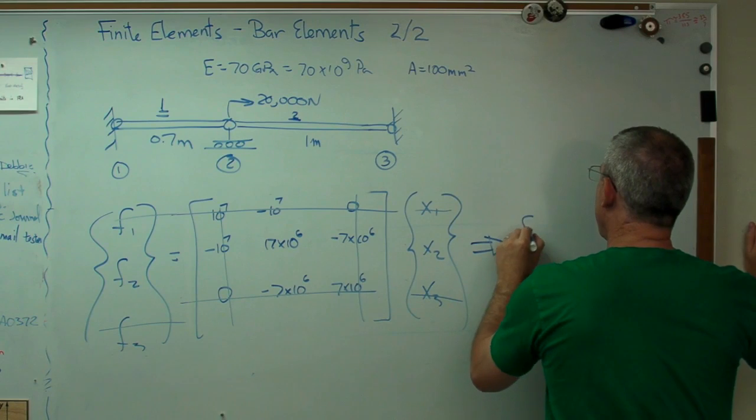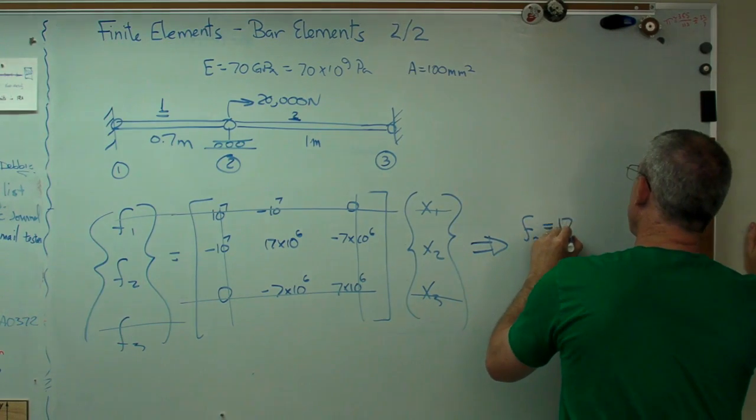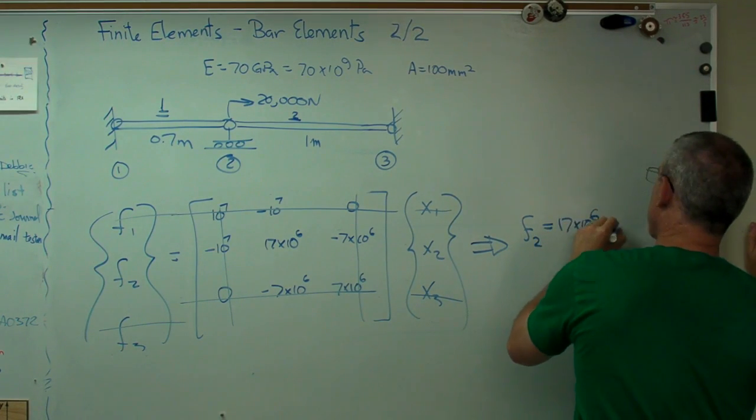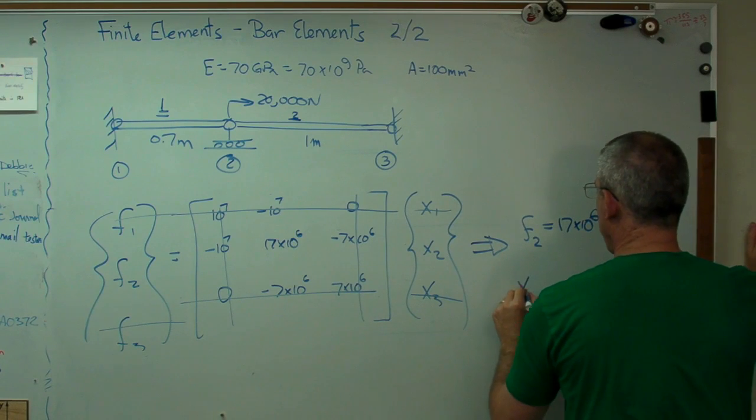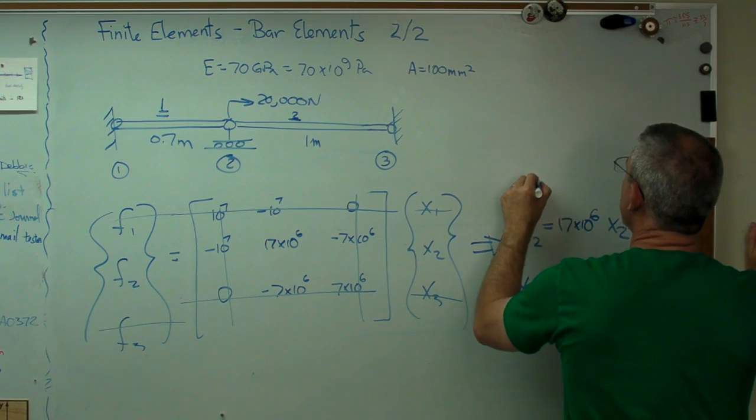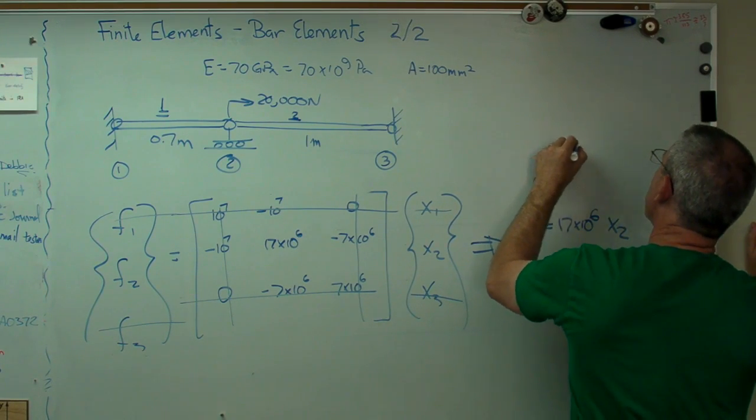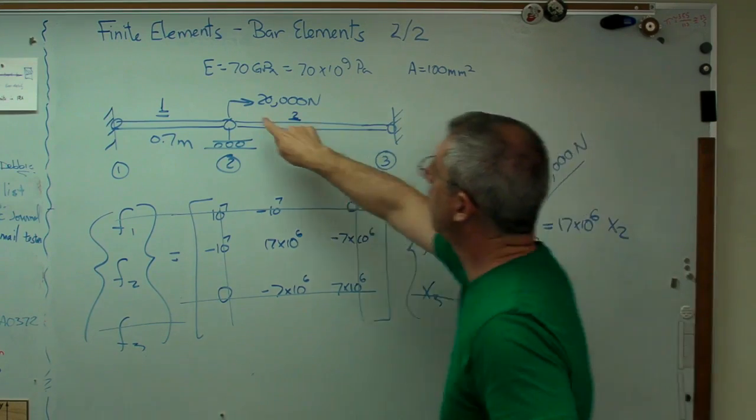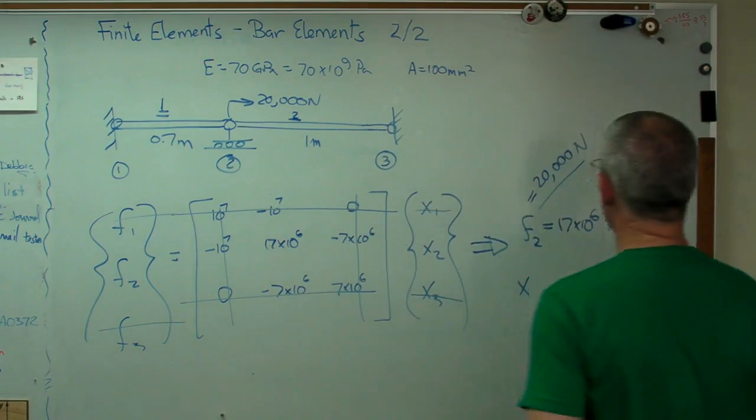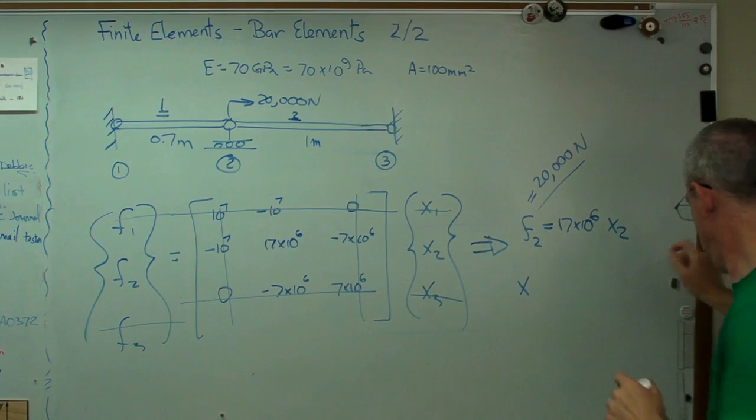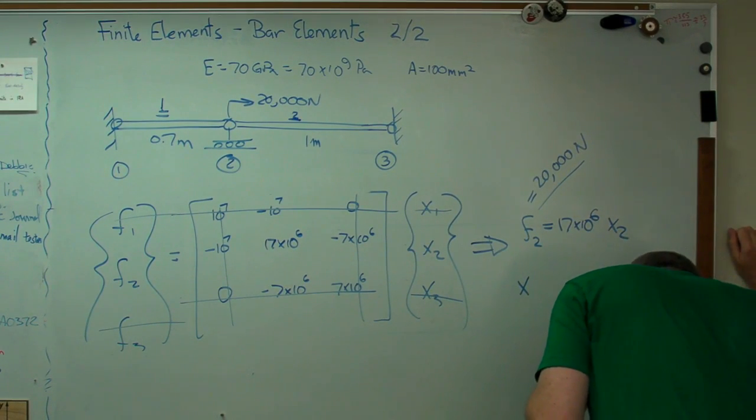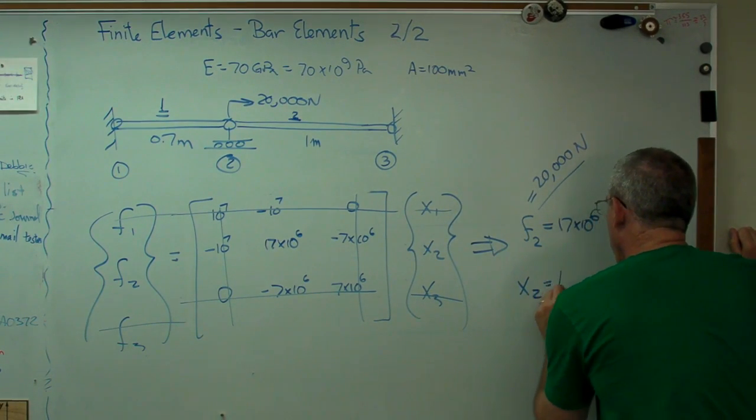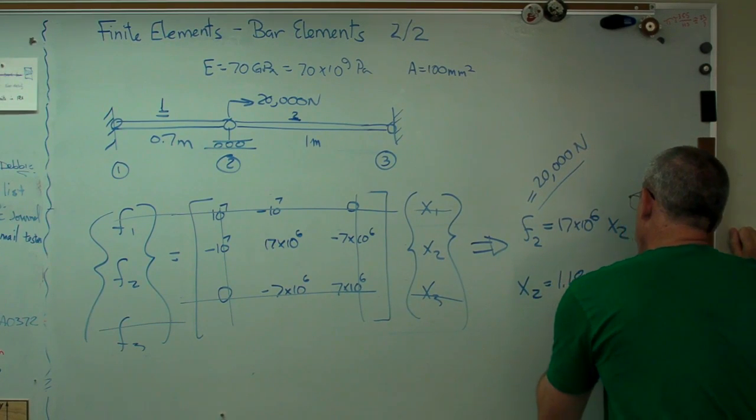And what I've got left is a one-by-one matrix problem. That's really a scalar problem. I have f2 equals 17 times 10 to the sixth x2. And if you work that out, that equals 20,000 newtons. Remember? And that's an external force now. We know what that is. So I've got one equation, one unknown. x2 turns out to be 1.18 millimeters.